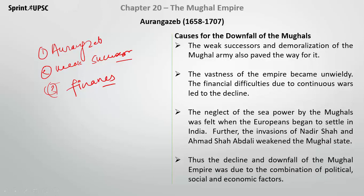The Mughals also neglected sea power. This neglect was felt when the Europeans began to settle in India. Furthermore, the invasions by Nadir Shah and Ahmed Shah Abdali greatly weakened and declined the Mughal state. These are also important factors in the Mughal decline.